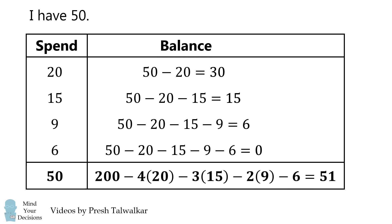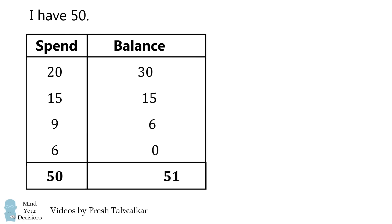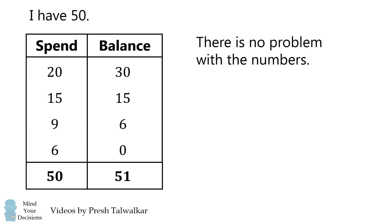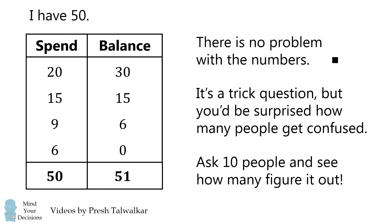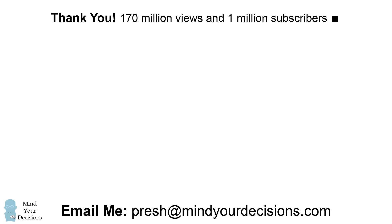And that's fine — it doesn't have to be equal to 50. So if we go back to the original table, it's completely correct and there's no problem with the numbers. It's just a trick question to compare the sum of these two columns, and you'd be surprised by how many people get confused. I challenge you to ask 10 people and see how many will figure it out. It's okay if they're confused, because now you'll be able to explain why the 50 and 51 are not equal to each other.